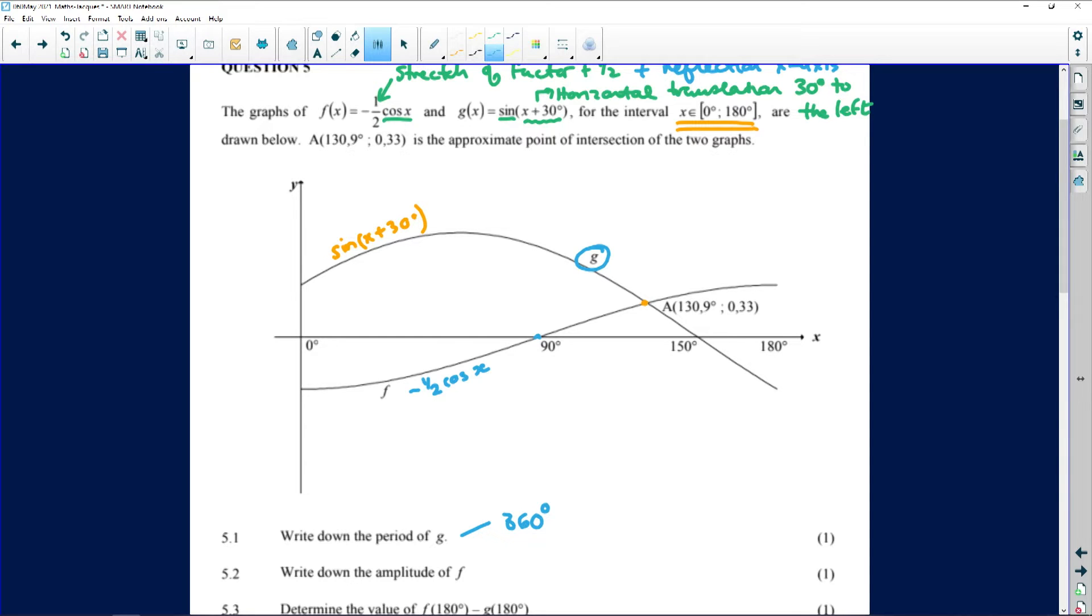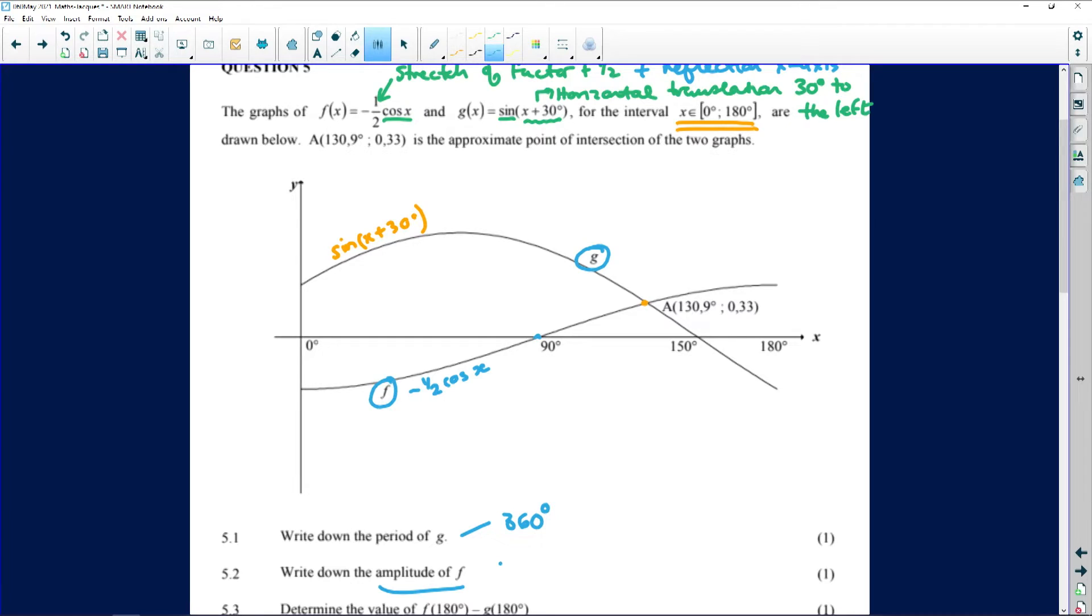They ask us secondly write down the amplitude of f. Now remember f is your cosine function. Despite the fact that it has been reflected in the x-axis, its amplitude has also shifted. We shrunk this graph with a stretch factor of a half. So your amplitude will be a maximum a half. The amplitude of f is a half. It has a maximum of a half and a minimum of minus half. So so far straightforward. These things you just need to know about your graphs.